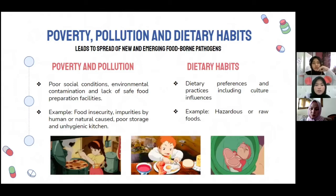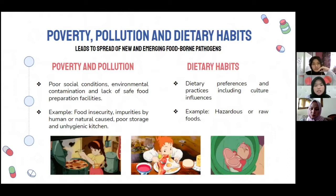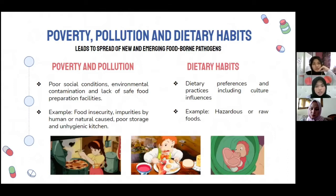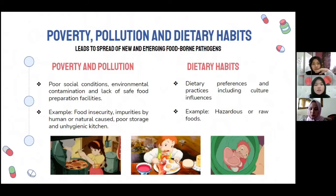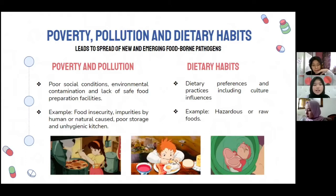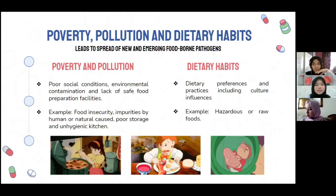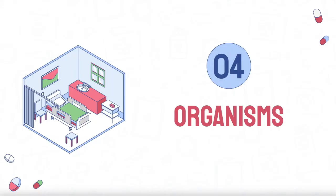However, for additional information, the process of producing, washing, and selecting meat, fish, and eggs in Japan is very strict in order to prevent these infections. Now let's move on to the organisms of new and emerging foodborne pathogens.